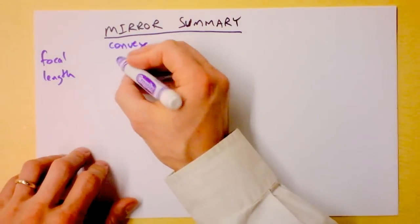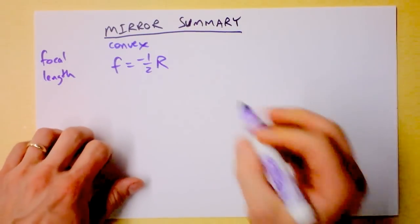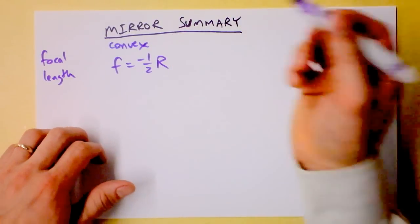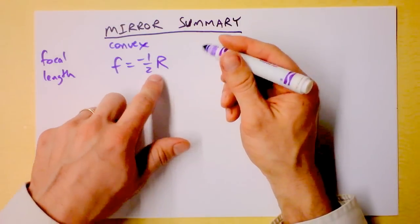So I put focal length F is negative one-half R. R is the distance to C. This distance right here is R.